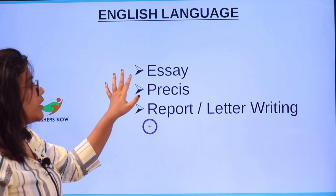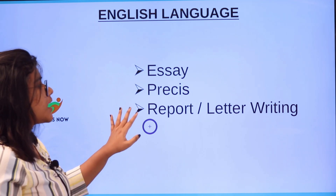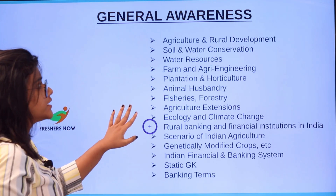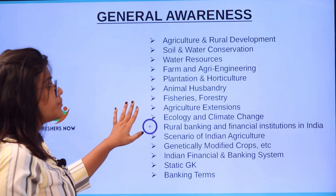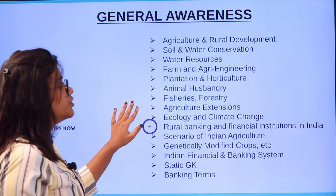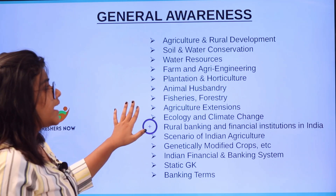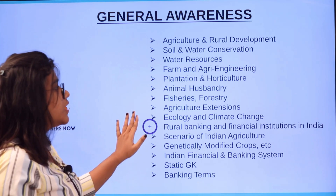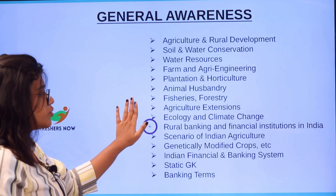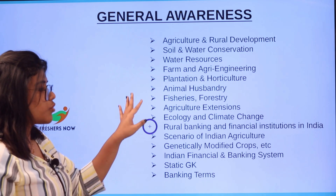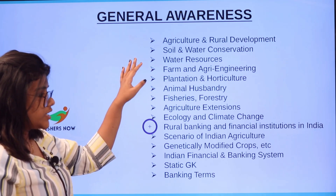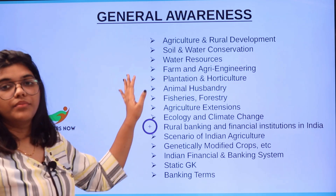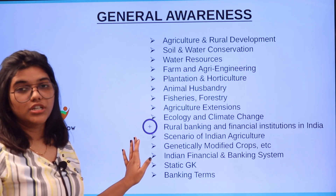For English Language, since it is a descriptive section, you will have essays, précis, report, and letter writing. For General Awareness, the topics include: agriculture and rural development, soil and water conservation, water resources, farm and agri engineering, plantation and horticulture, fisheries, forestry, agriculture extensions, rural banking, genetically modified crops, Indian financial and banking system, static GK, and banking terms.